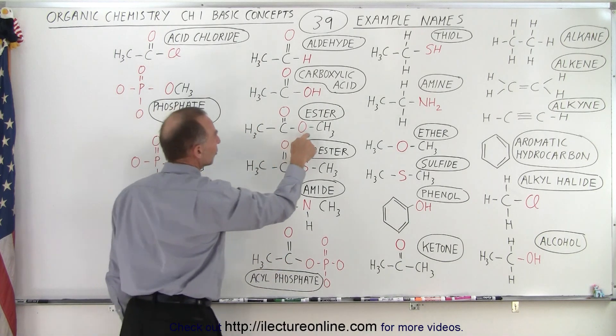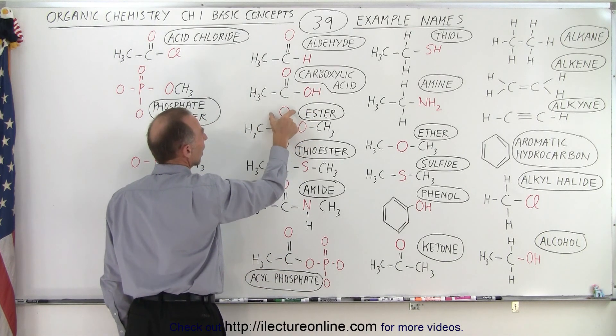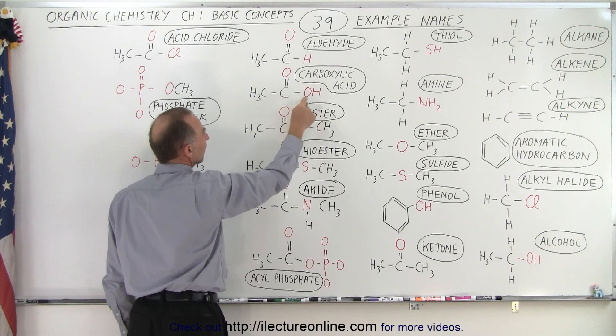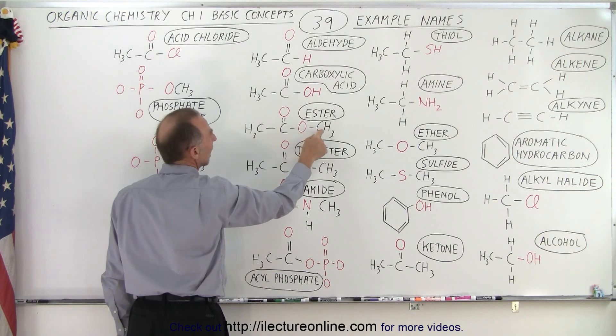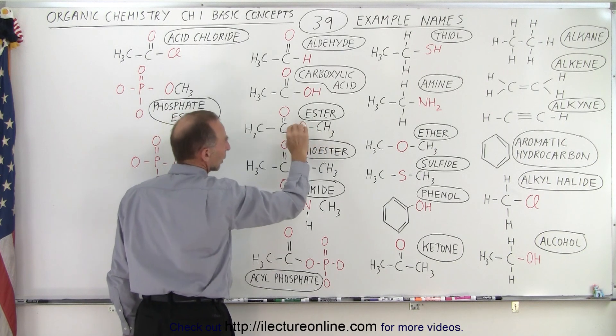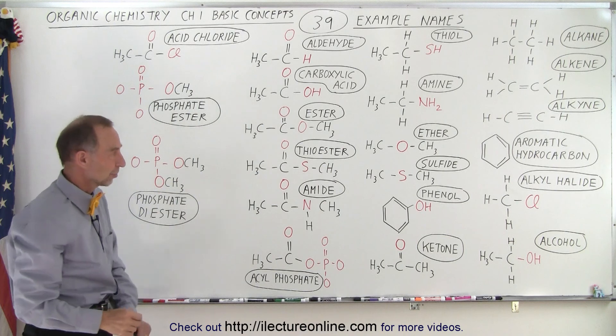Here we have an ester which looks very much like the acid. Notice we have the oxygen double bond, but instead of having the OH hydroxyl group, we have an oxygen and then another carbon there. Or it could be a carbon chain, so that makes it an ester.